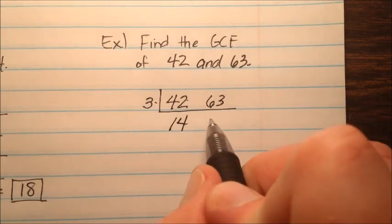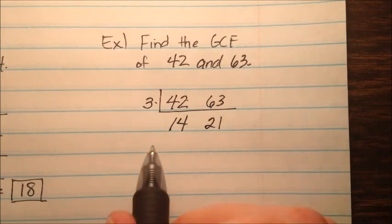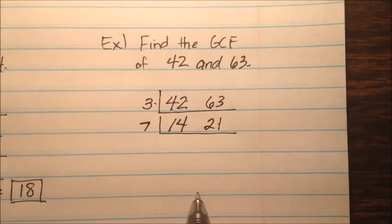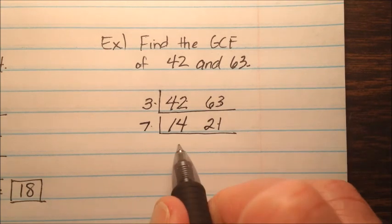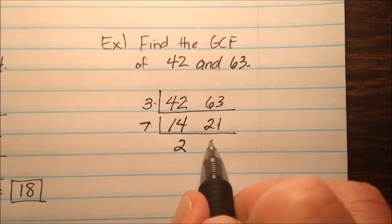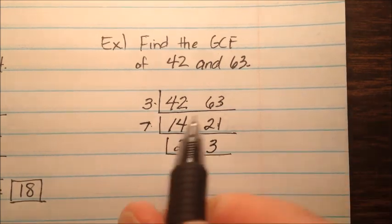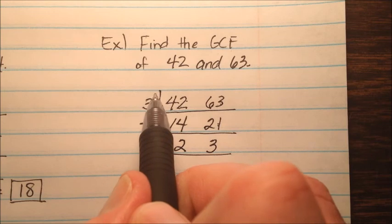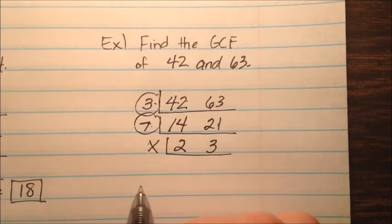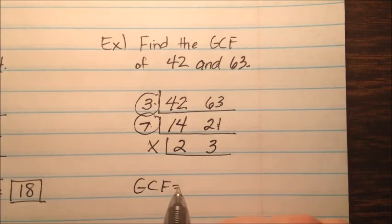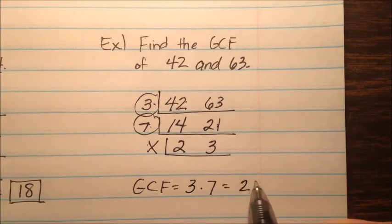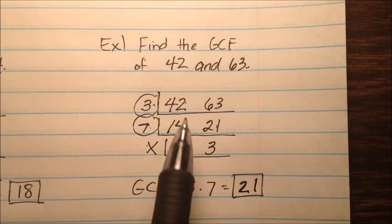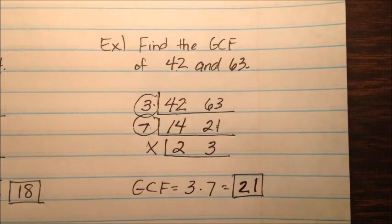63 divided by 3 is 21. And it looks like 14 and 21 will both divide nicely by 7: 14 divided by 7 is 2, and 21 divided by 7 is 3. We're left with 2 and 3, which nothing can divide evenly. So the product of 3 and 7 will be my GCF — 3 times 7 is 21. The greatest common factor of 42 and 63 is 21.